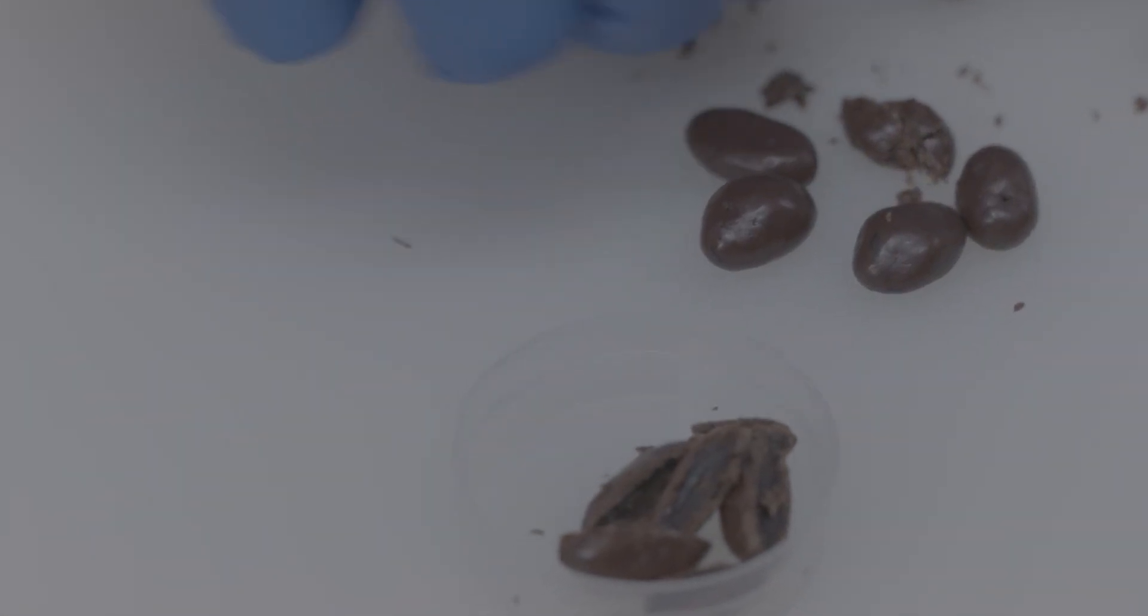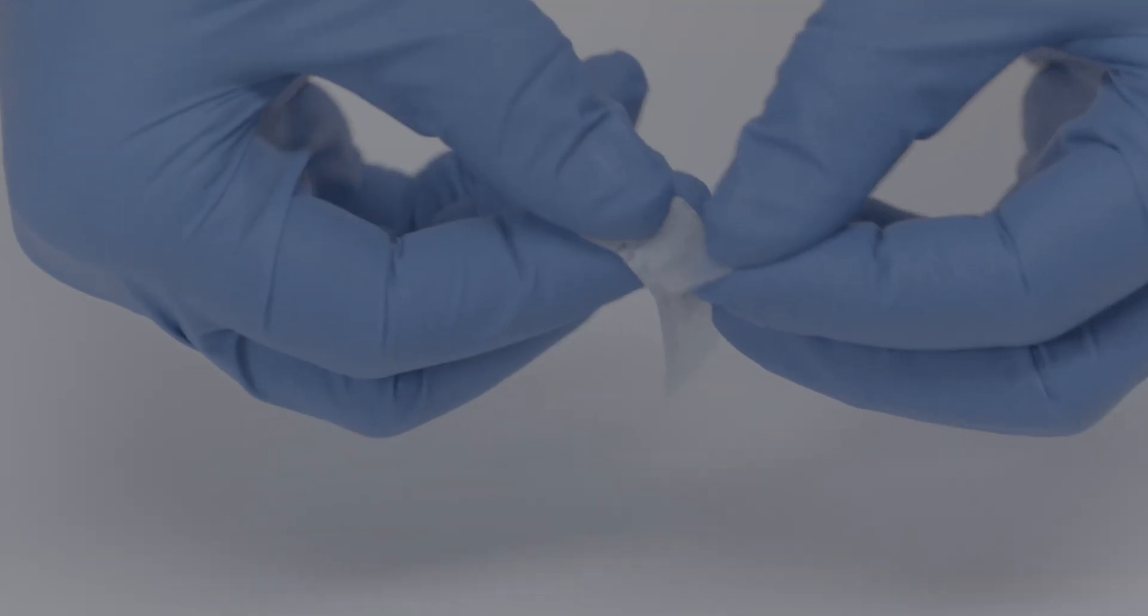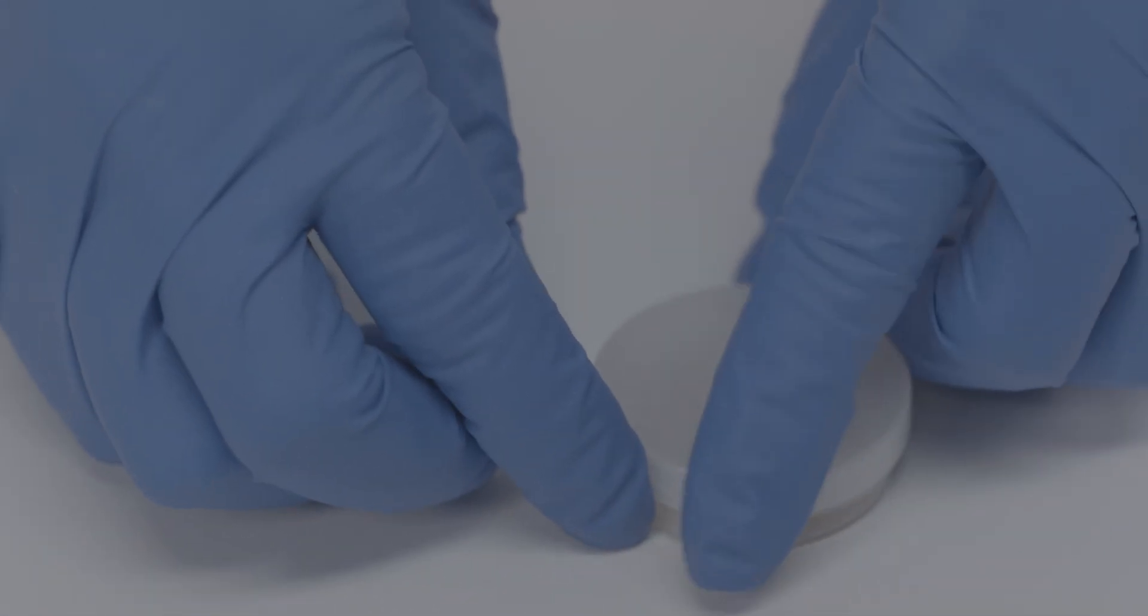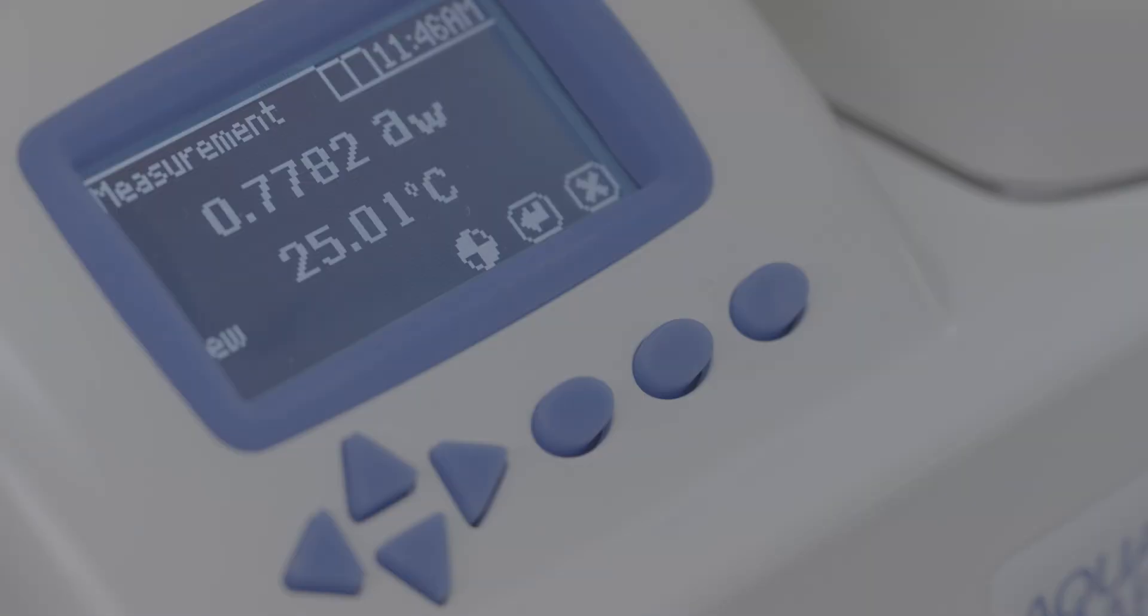Establish a standard operating procedure to specify how samples are prepared and be consistent. Your procedure should include how the sample is handled while waiting to be read and the temperature the sample and instrument should be at during the reading. When you set up this protocol, consider running your own tests to find which preparation method produces the most stable result.